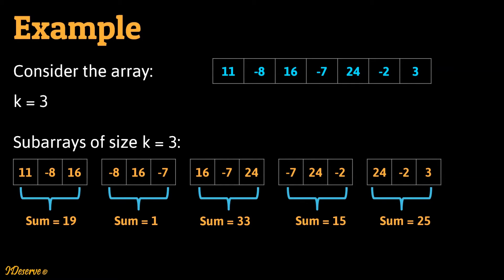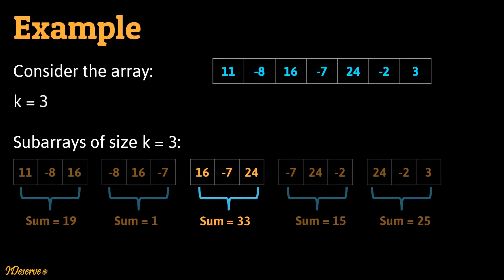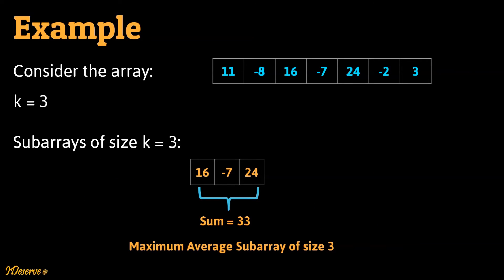The final subarray contains elements 24, -2, and the sum is 25. So the maximum sum subarray of size k in the array contains elements 16, -7, and 24, with a sum of 33, which is also the maximum average subarray of size 3.